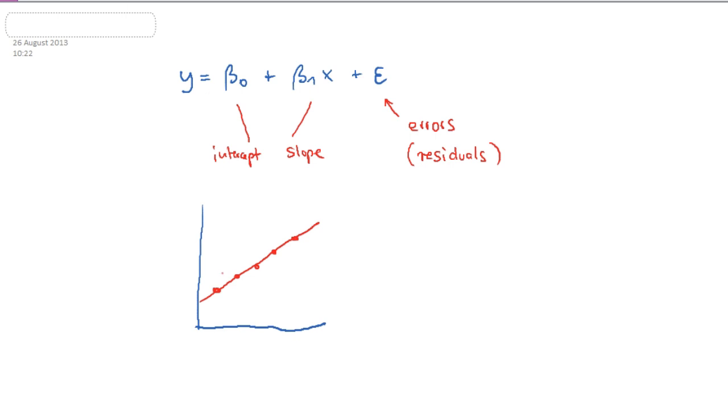Now because there is variation around the line, we usually need to use this formula with the epsilon term for our linear statistical model.